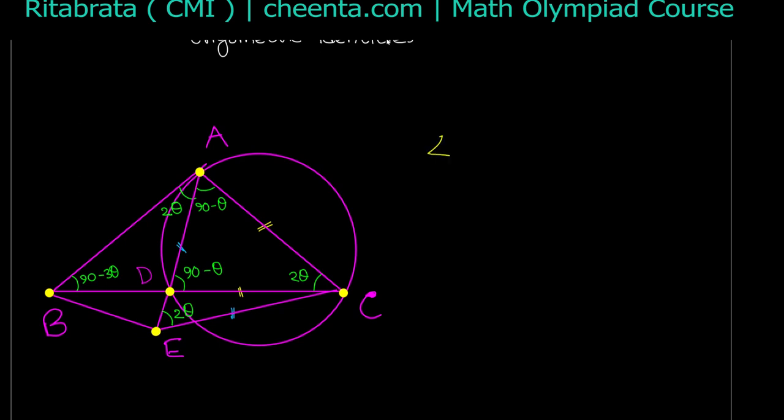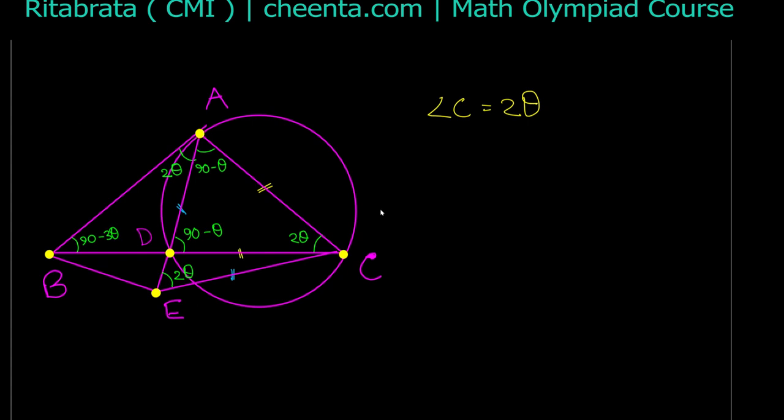I assume angle C equals 2θ and find the other angles in terms of θ. Why 2θ instead of θ? It's just because if I say C equals θ, then other angles become 90 minus θ/2 or 90 minus 3θ/2 — fractional angles — and that looks bad. So to avoid that I'm using 2θ. Since the two side lengths AC and CD are equal, the two base angles are equal, both being 2θ, so angles DAC and ADC are both 90 minus θ.